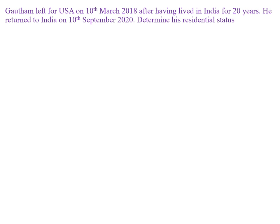I have taken a few problems as examples. The first problem is: Gautam has left for USA on 10th March 2018 after living in India for 20 years. He returned to India on 10th September 2020. Determine his residential status. Whenever you have a problem, you have to give a title. So I have given the title: Determination of Residential Status of Mr. Gautam for the assessment year 21-22.